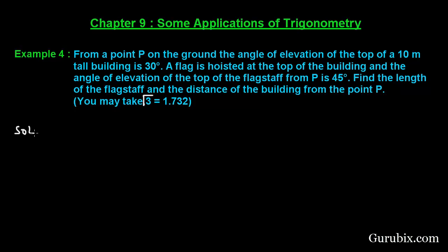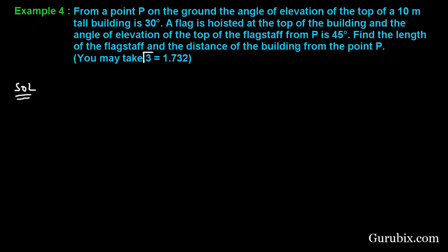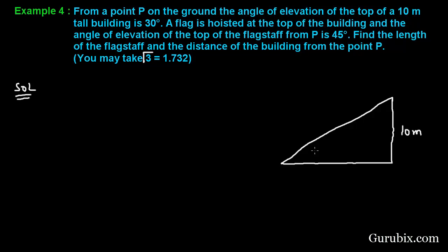Let us see how to solve this question. Let us draw a rough sketch of the figure using the information given in the question. Suppose this is the ground and here we have a building which is 10 meters tall. The angle of elevation of the top of the building is 30 degrees, so if we draw this line, this angle is 30 degrees. A flag is hoisted at the top of the building, and the angle of elevation of the top of the flag staff from point P is 45 degrees, so this angle is 45 degrees.